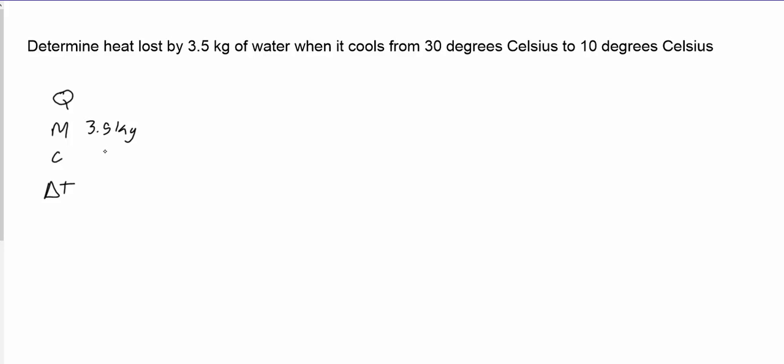We are told that it cools from 30 degrees to 10 degrees, so this tells us 10 minus 30 equals negative 20 degrees Celsius. So our change in temperature is negative. That means we should expect a negative Q because it's losing, not gaining energy.